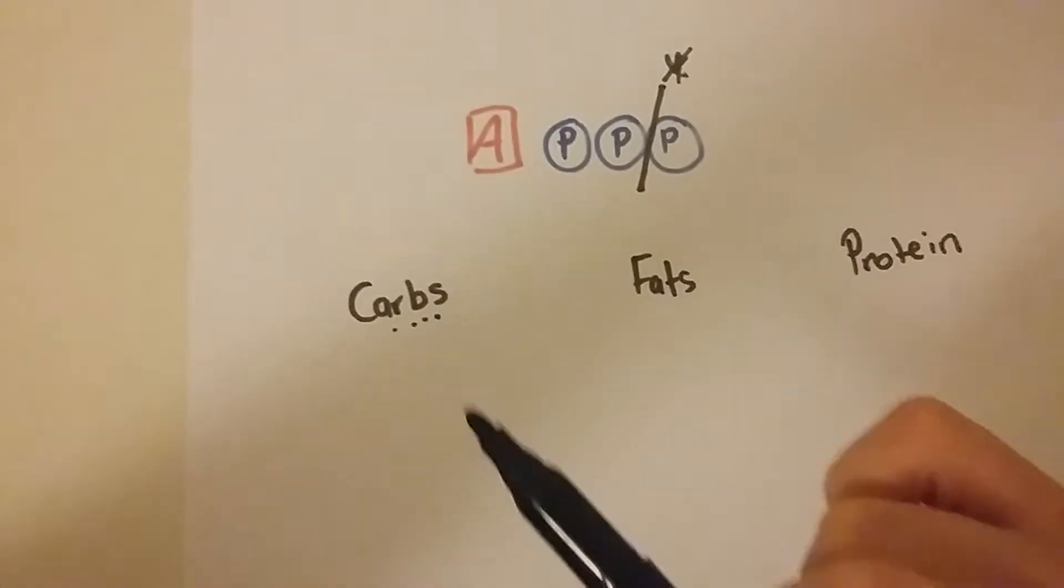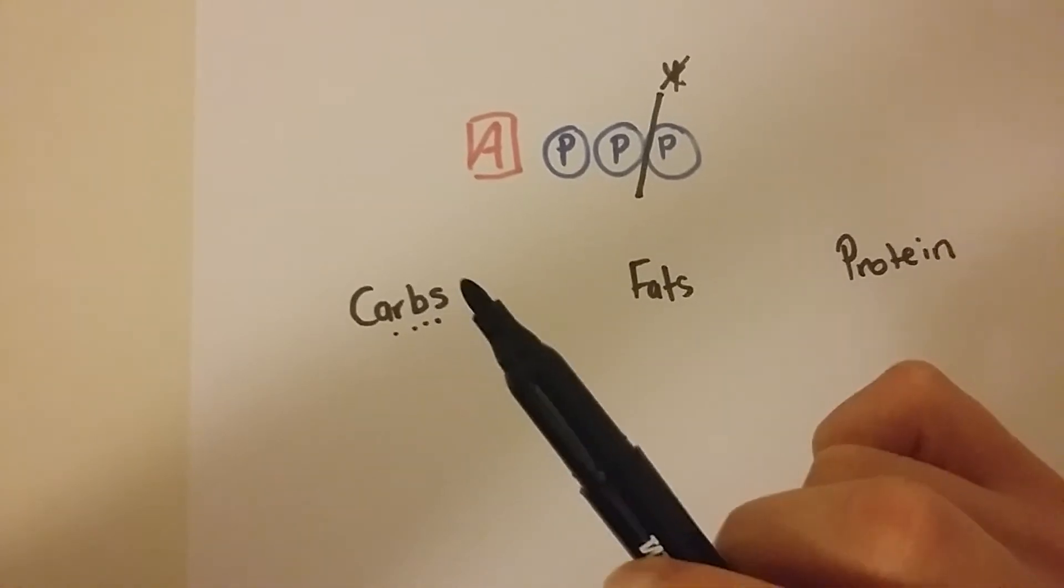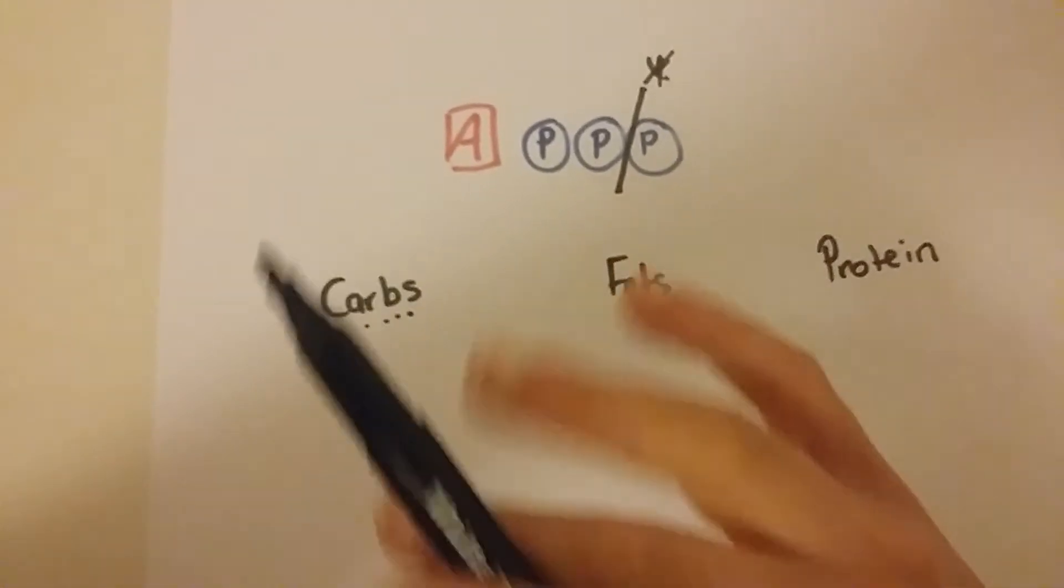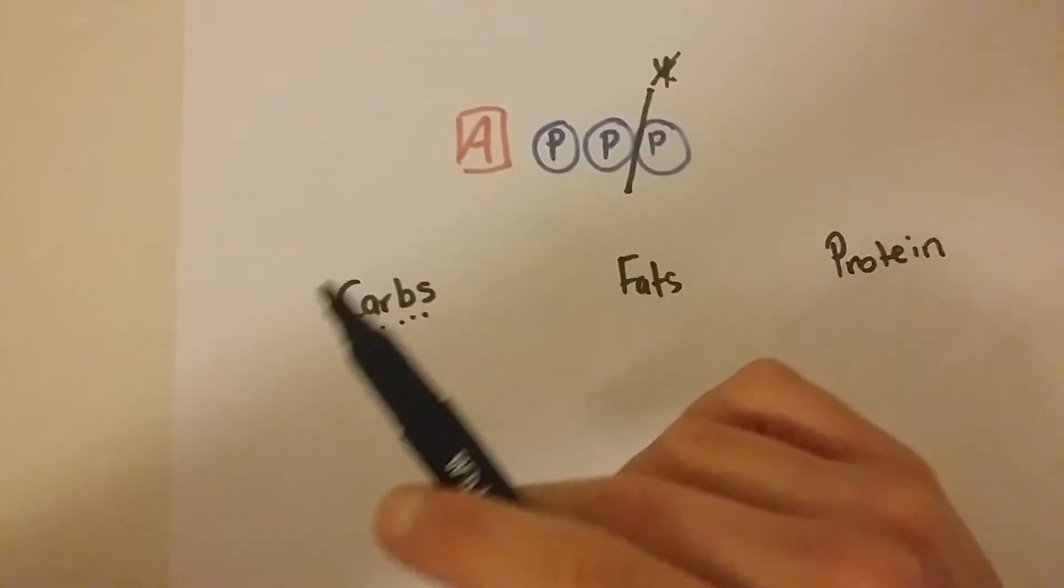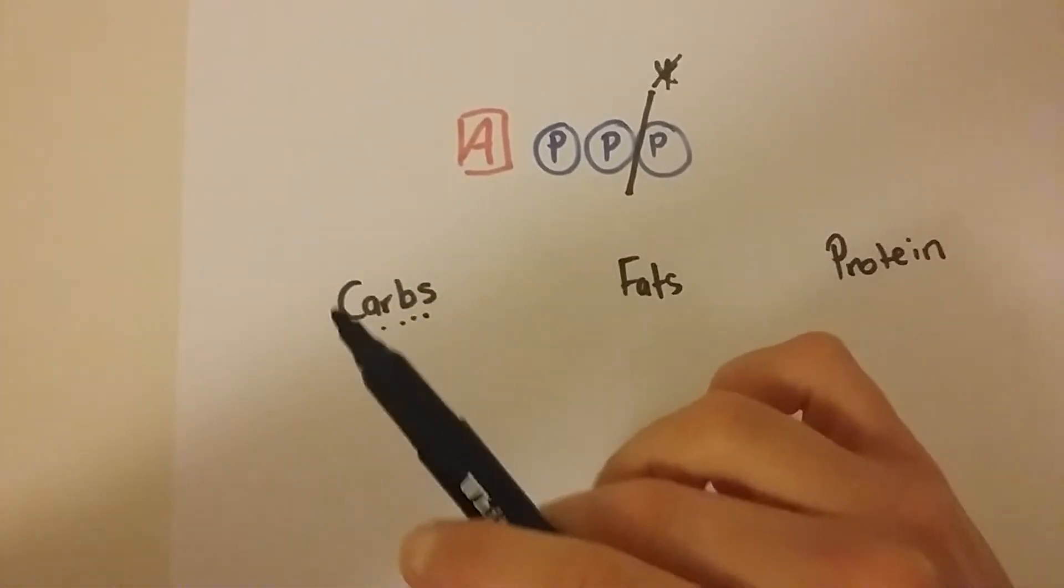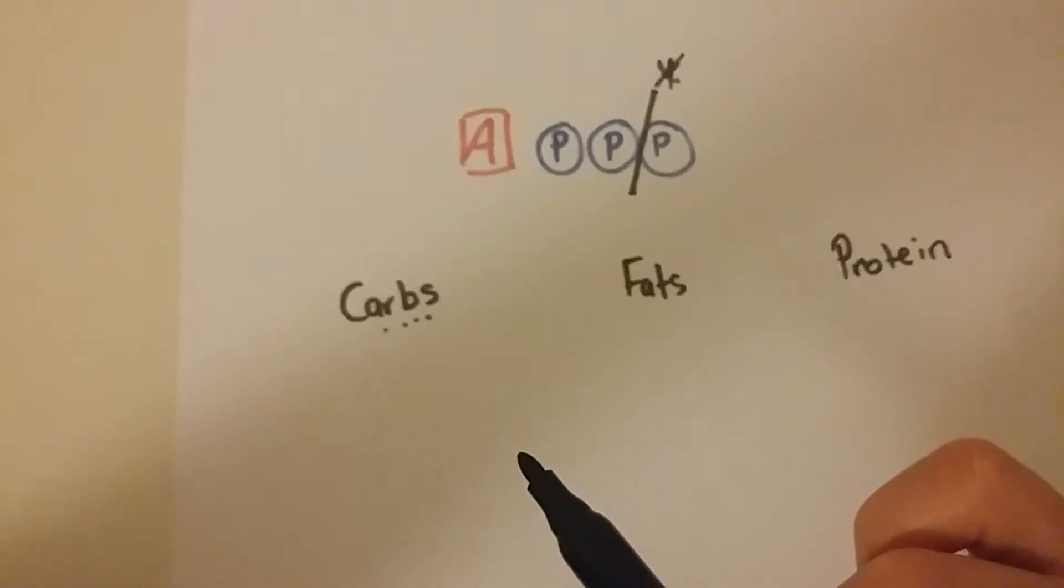Where they get this carb source from is almost neither here nor there in relation to just energy systems itself. So you might go fruit and veg, you might go down the route of rice, potatoes, bread, whatever is appropriate in relation to the macronutrient, but then you'll look at it and analyze in relation to micronutrients in particular.